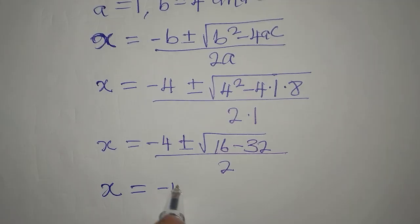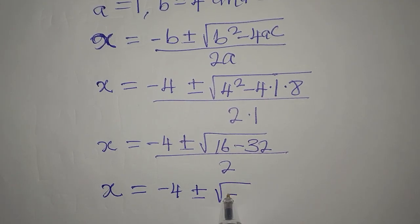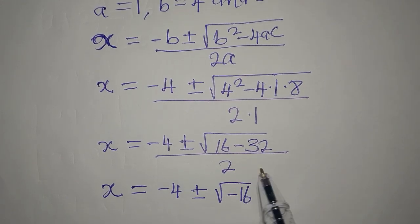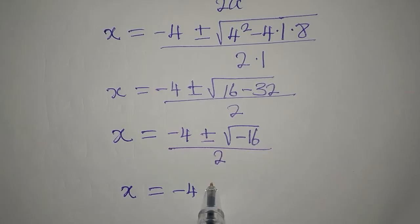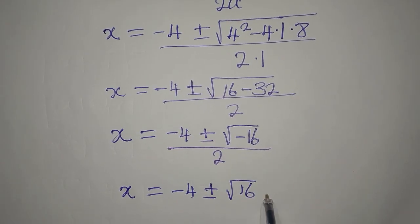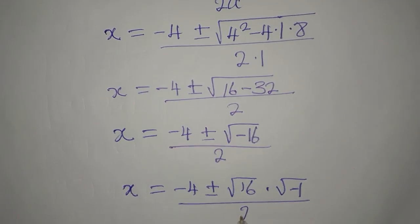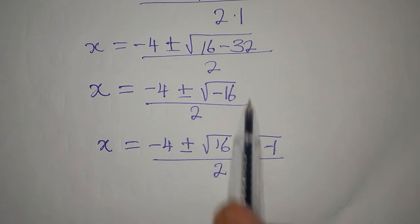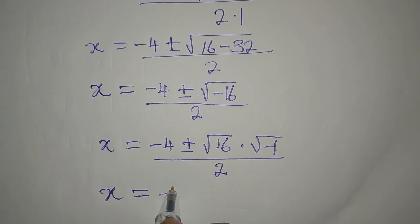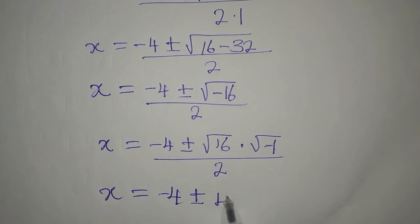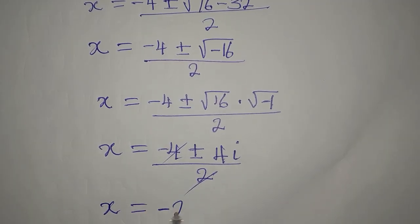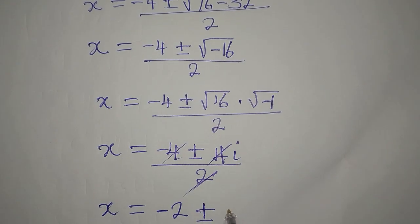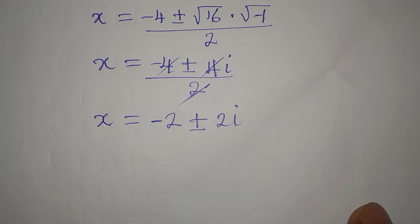Our x is minus 4, plus or minus the square root of negative 16, divided by 2. We rewrite this as minus 4, plus or minus the square root of 16 multiplied by the square root of negative 1, divided by 2. The square root of 16 is 4, and the square root of negative 1 is i. Dividing through by 2, x becomes minus 2, plus or minus 2i.